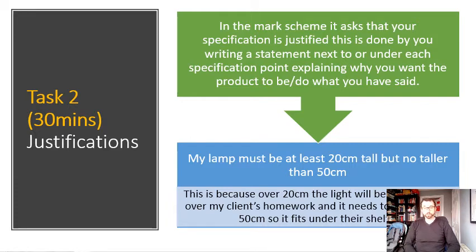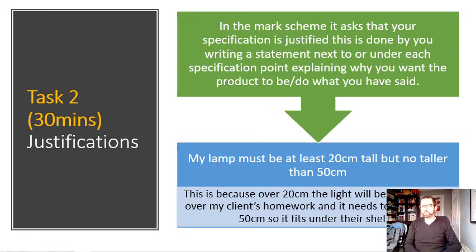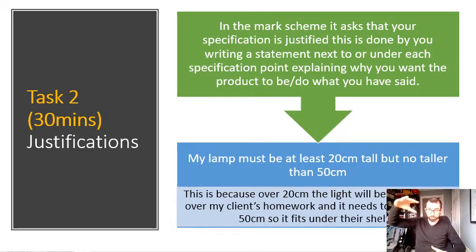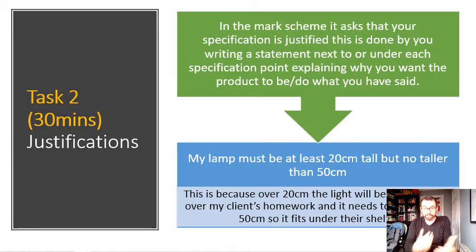The hard bit is writing your specification points, which you've done. The easier bit is often explaining why you want those points. Writing a specification is you pulling things out of your head as to what you want; justifying it is then just linking it back to the work you've already done. The mark scheme clearly asks you to justify your specification points. For example: my lamp must be at least 20 centimetres tall but no taller than 50 centimetres. This is because over 20 centimetres the light will reach over my client's homework, but it needs to be less than 50 centimetres because there are shelves above it — really clearly linking to the research undertaken.